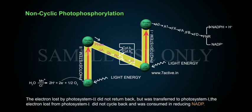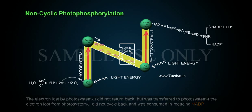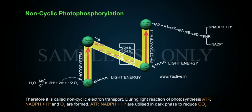The electron lost by photosystem 2 did not return back but was transferred to photosystem 1. The electron lost from photosystem 1 did not cycle back and was consumed in reducing NADP. Therefore, it is called non-cyclic electron transport.